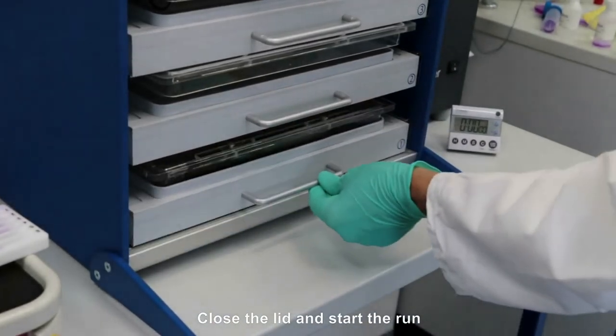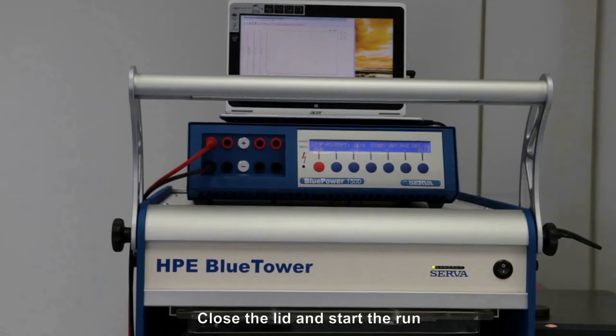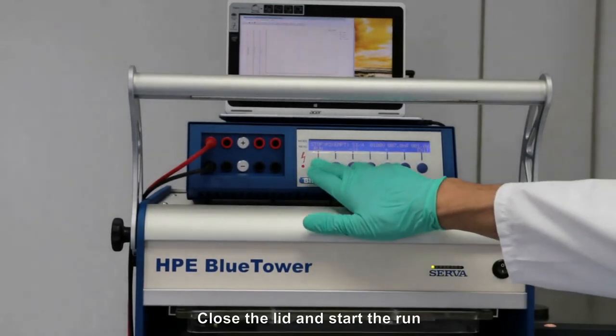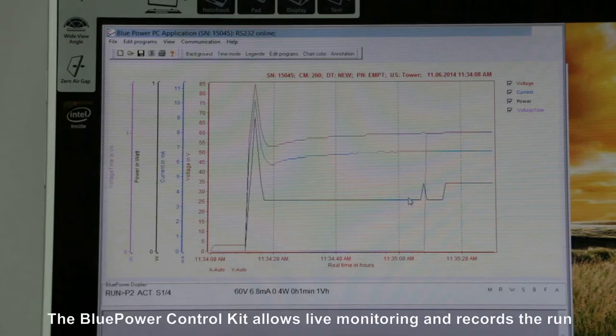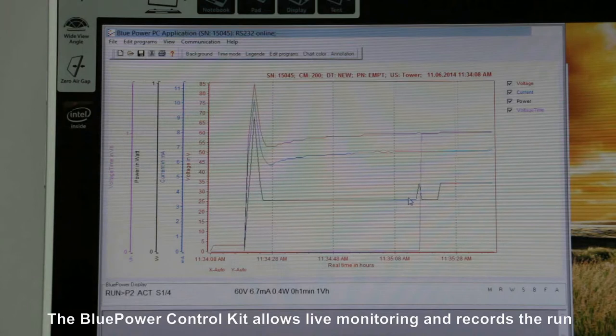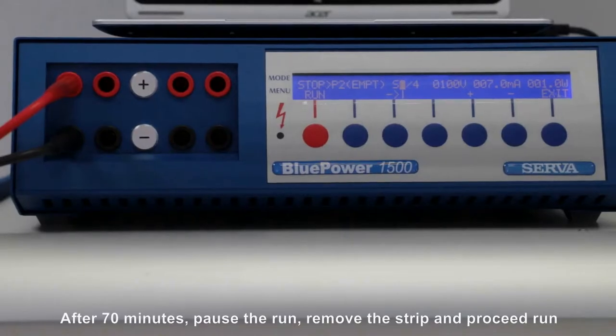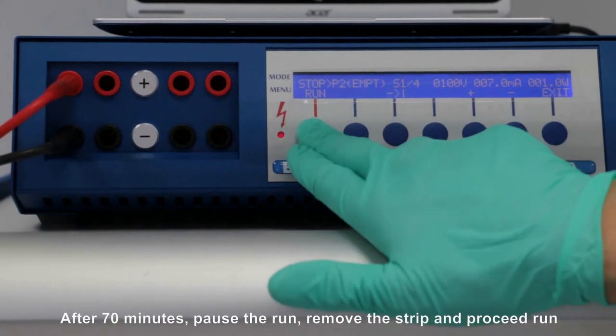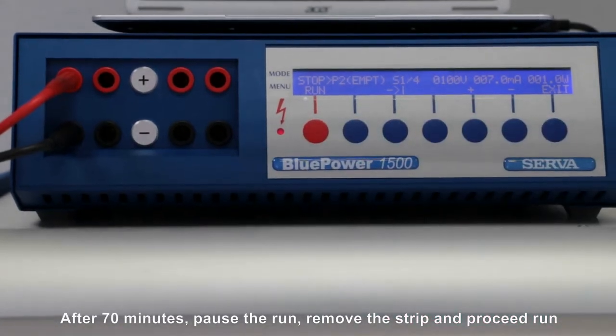Close the lid and start the run. The blue power control kit allows live monitoring and records the run. After 17 minutes pause the run.